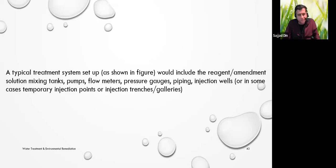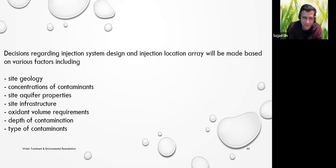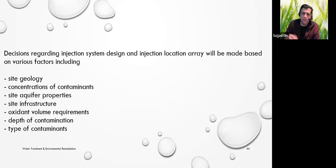A typical in-situ system has mixing tanks, pumps, flow meters, pressure gauges, and piping. Before you go and do site remediation, you need to know the site geology, concentrations of contaminants, site aquifer properties, infrastructure, and what oxidants to use. We have a partner called Chemco that helps with the calculations for how much compound to order. They'll be at an upcoming conference called Smart Remediation. Here's a typical design setup: a permanent non-mobile treatment plant where the reagent is housed, mixing takes place, and it's pumped through a pump into permanently existing wells.